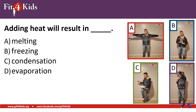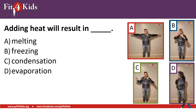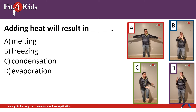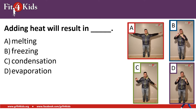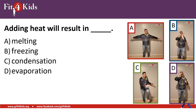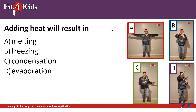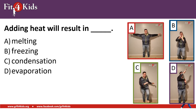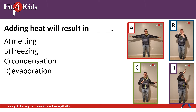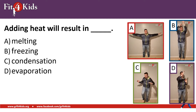Adding heat will result in blank. A, melting; B, freezing; C, condensation; D, evaporation. There can be two answers here. Depending on what you're adding heat to, it could either A, melt that object if it is a solid — those would be arm circles — or D, evaporate that object if it was a liquid, so sky reaches. Either A, melting, or D, evaporation is correct.